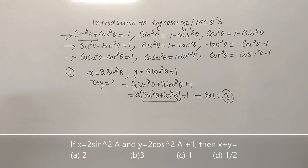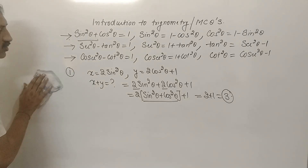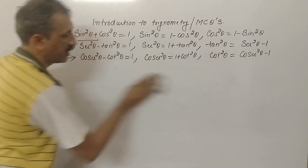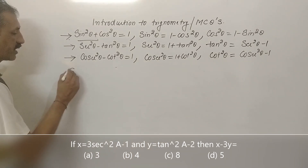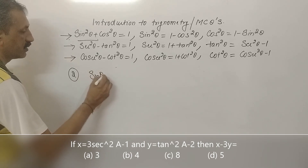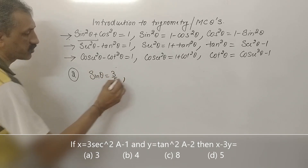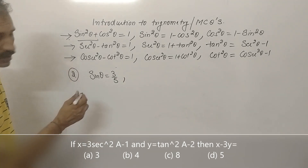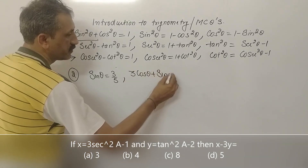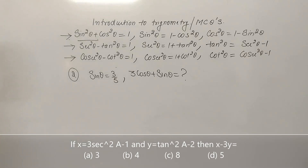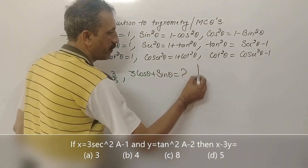Now the second question: you are given one trigonometric function — sin theta is equal to 3 by 5. Find the value of 3 cos theta plus sin theta.